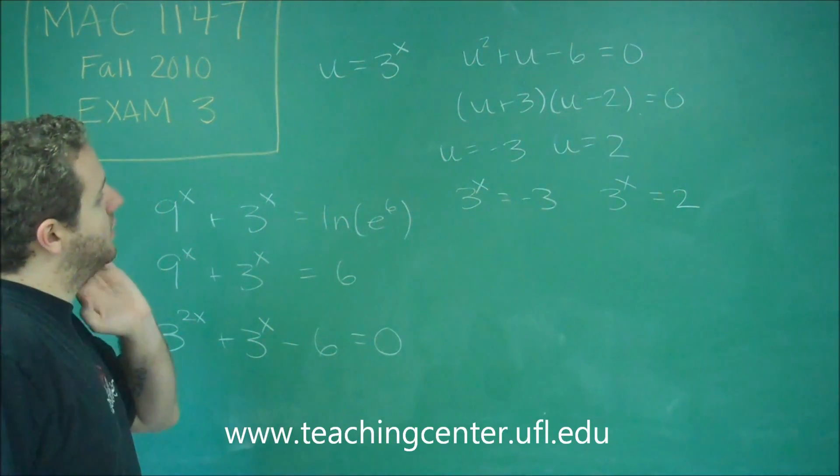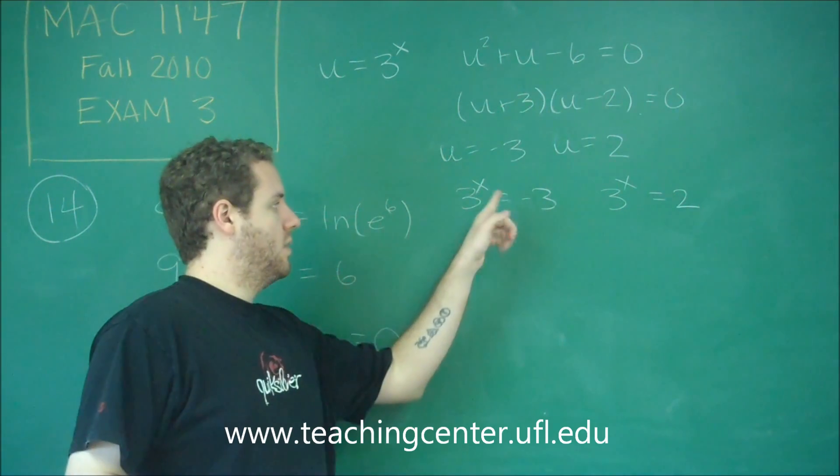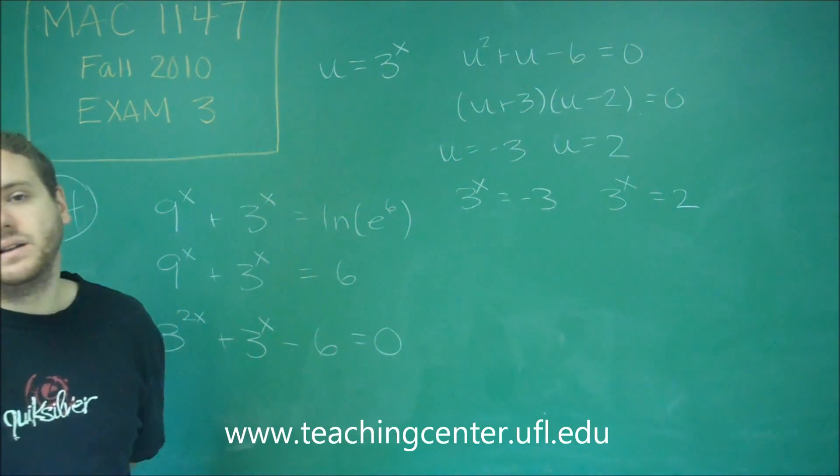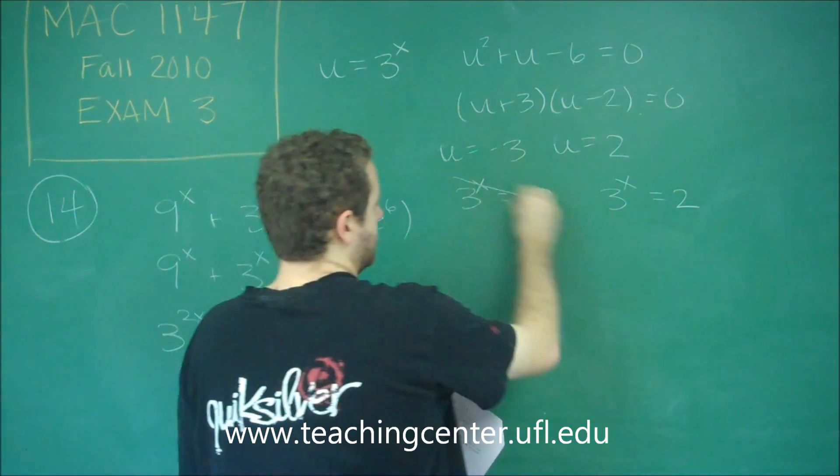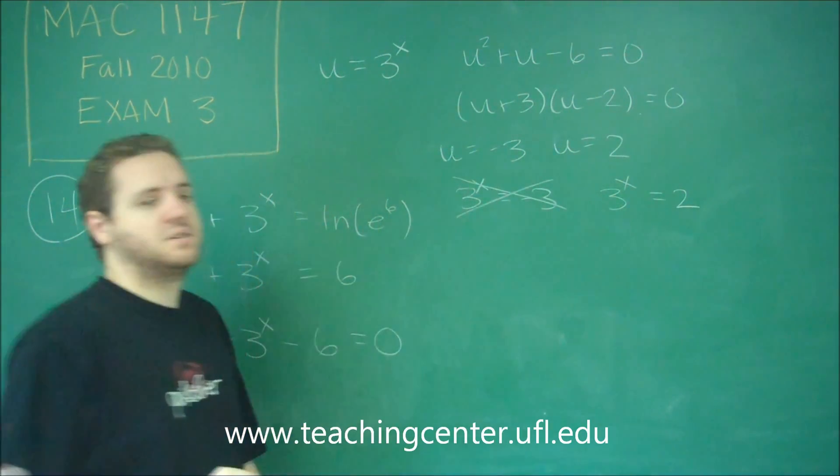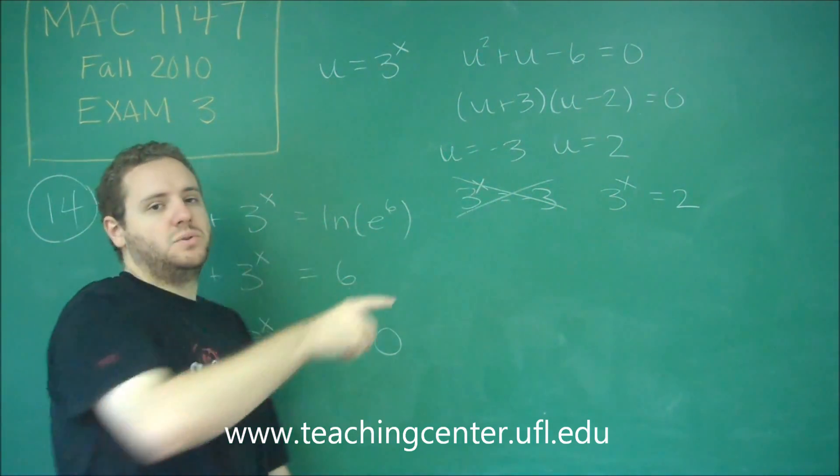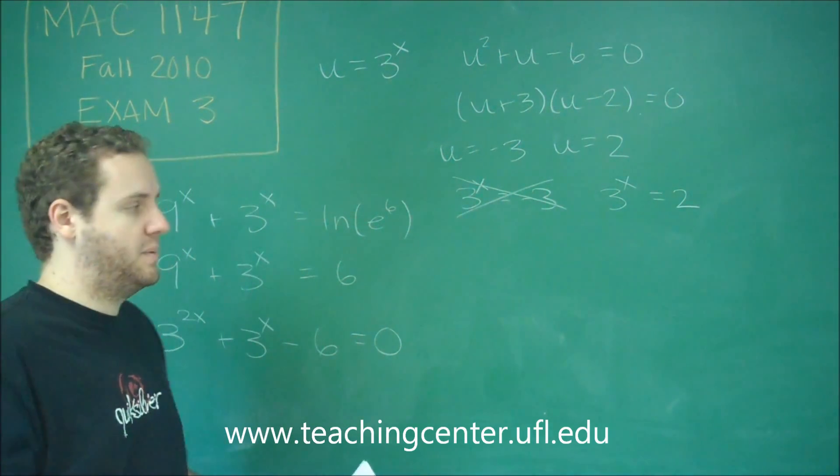So any number to a power, as long as the base is positive, that could never give you a negative answer. So this is an extraneous solution. 3^x could never be -3. So remember any negative power you would do is just making it a fraction, so it's never going to be a negative number.